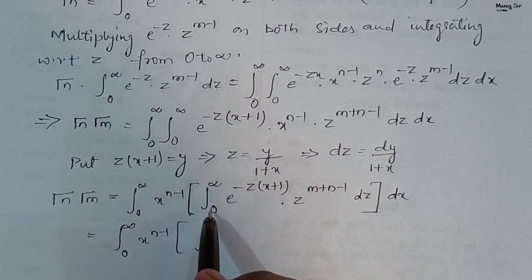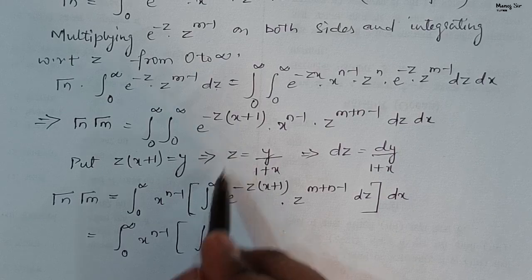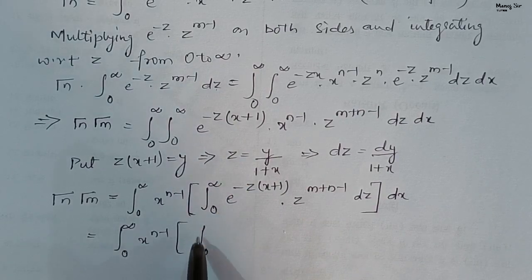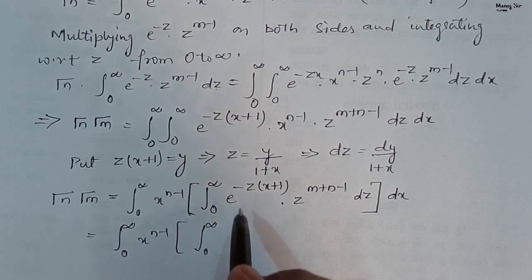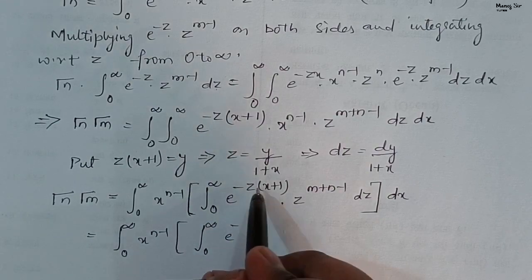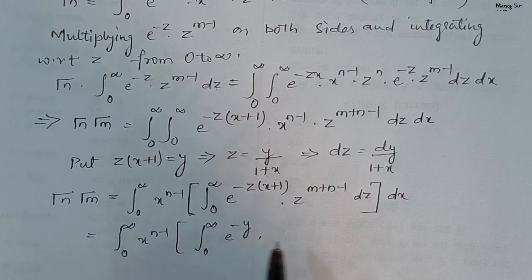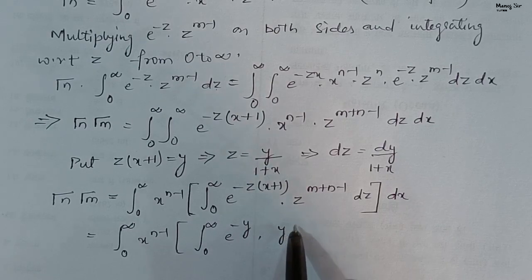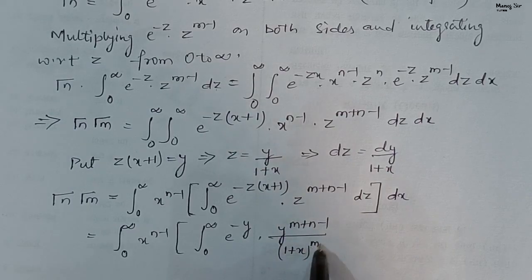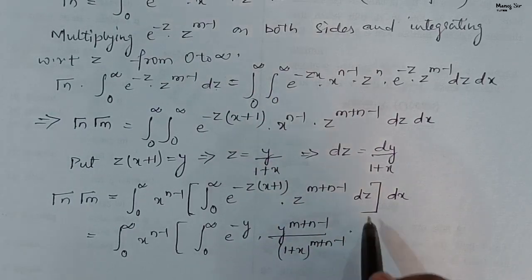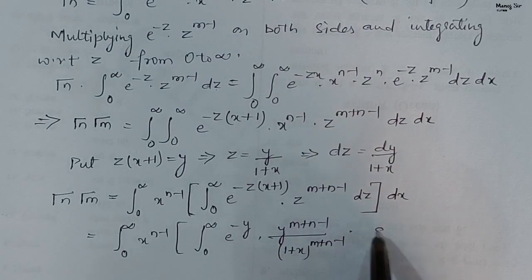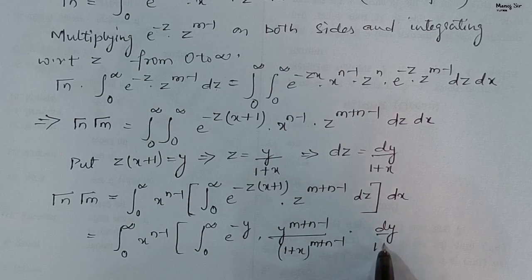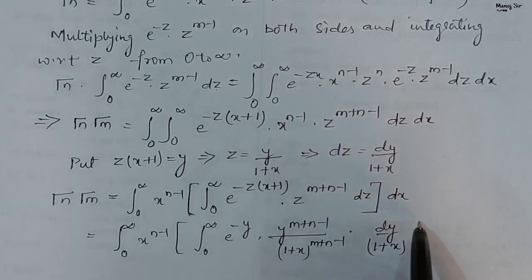After substitution, the inner integral becomes e to the power minus y, times y power m plus n minus 1 upon (1 plus x) power m plus n minus 1, times dy upon 1 plus x. Combining the (1 plus x) terms gives 1 upon (1 plus x) power m plus n, which can be taken out of the inner integration.